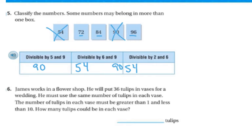90 can also go into 6 and 9 because it's divisible by both. 72 can go into divisible by 6 and 9, and also divisible by 2 and 6. 84 is not divisible by 6 and 9, but it is divisible by 2 and 6. 96 is not divisible by 9 and 6, but it is divisible by 2 and 6. By divisible, I mean that the number can go into it with no leftovers.